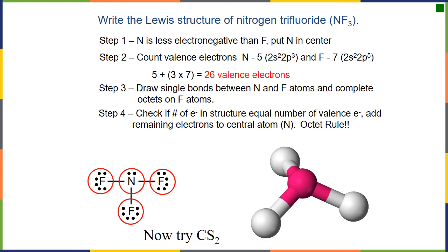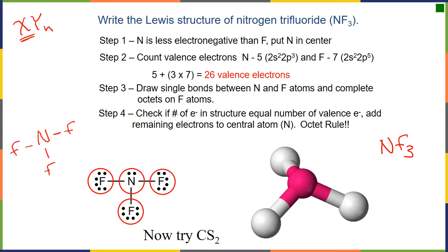The only way to do these is to practice. Let's draw the skeletal structure for NF3. We know nitrogen is in the middle — anytime you have XYn, Y is most likely in the middle. Also, nitrogen has a lower electronegativity than fluorine, putting it in the middle. We start with the central atom and single bond the fluorines to it.